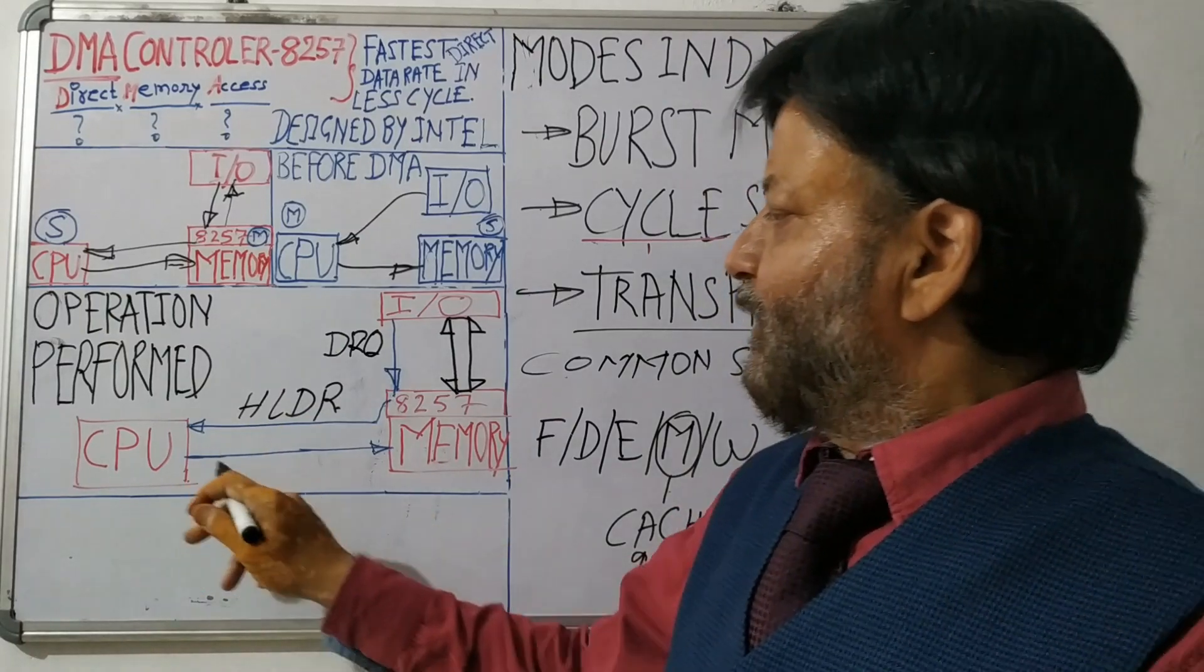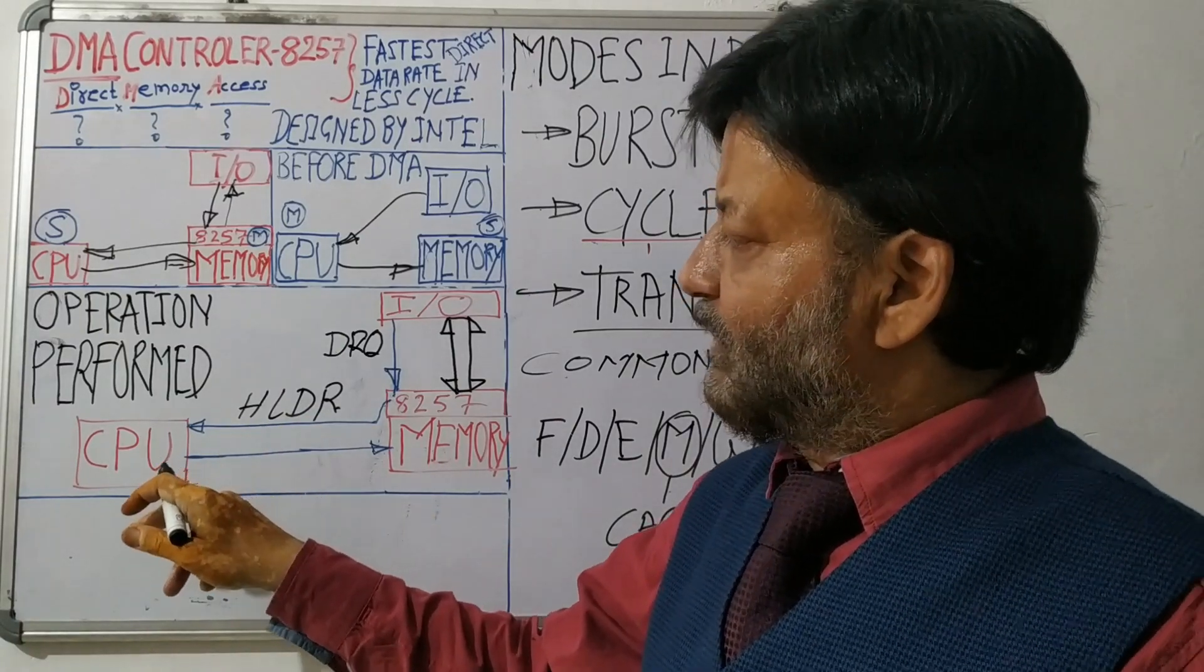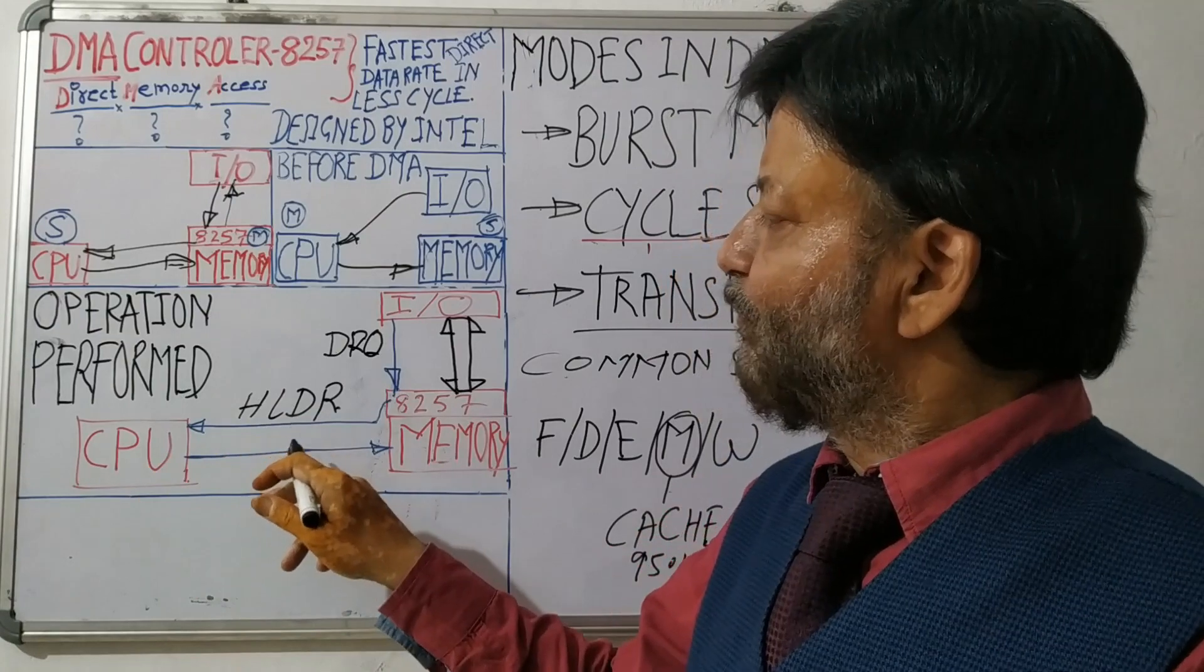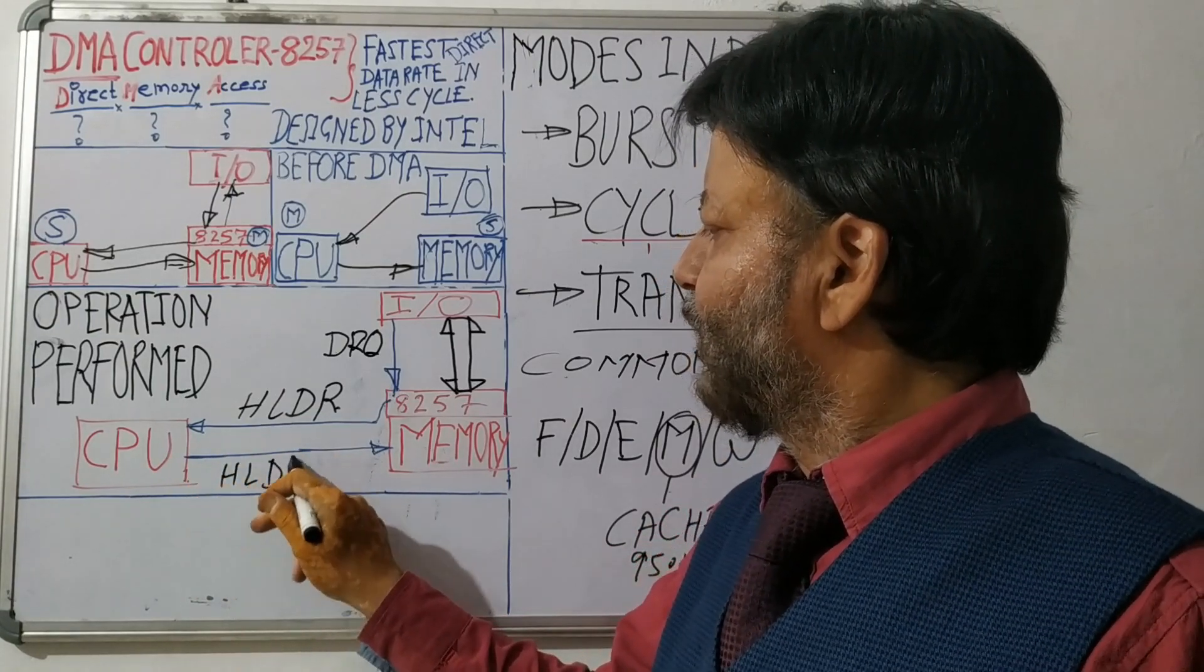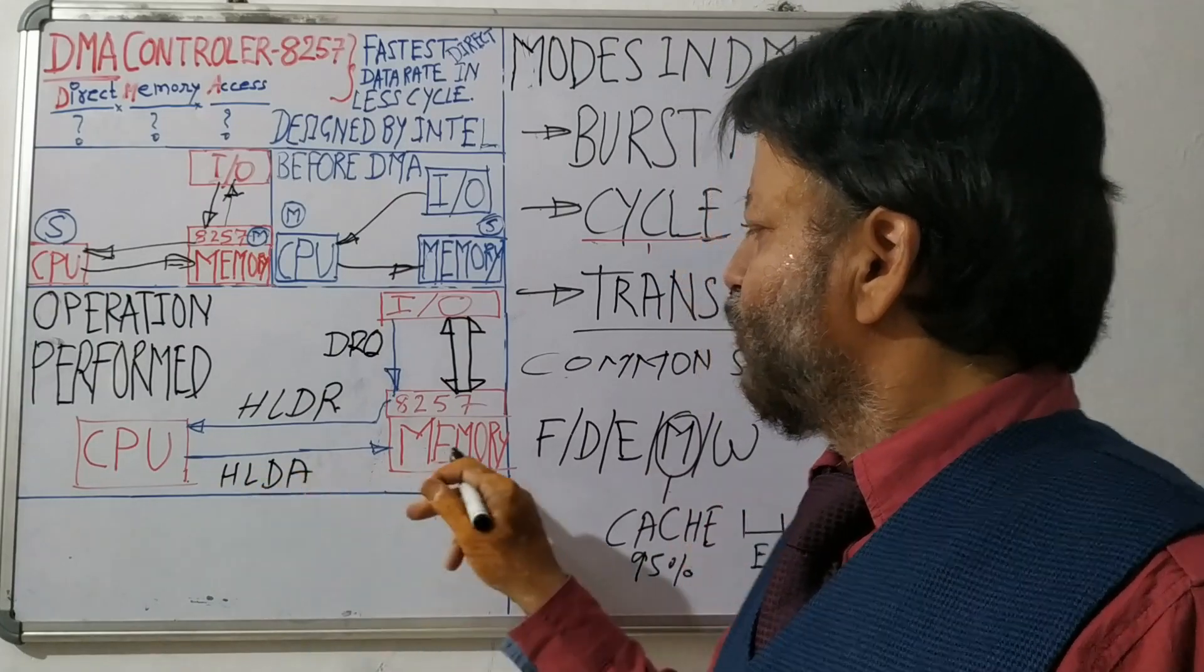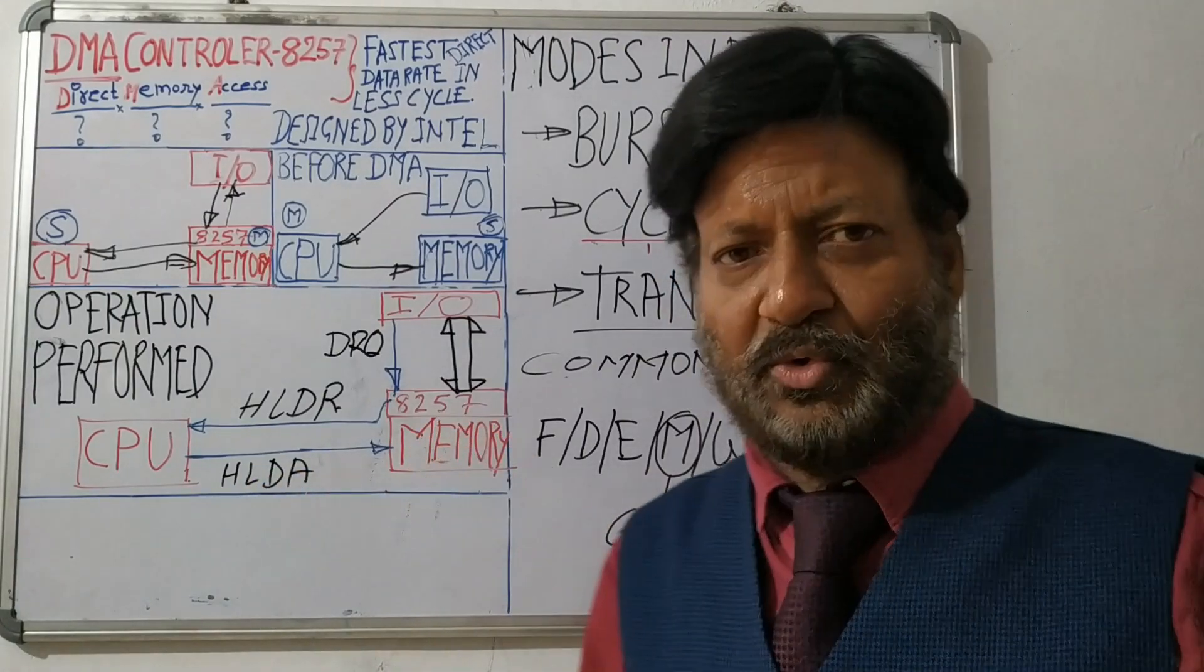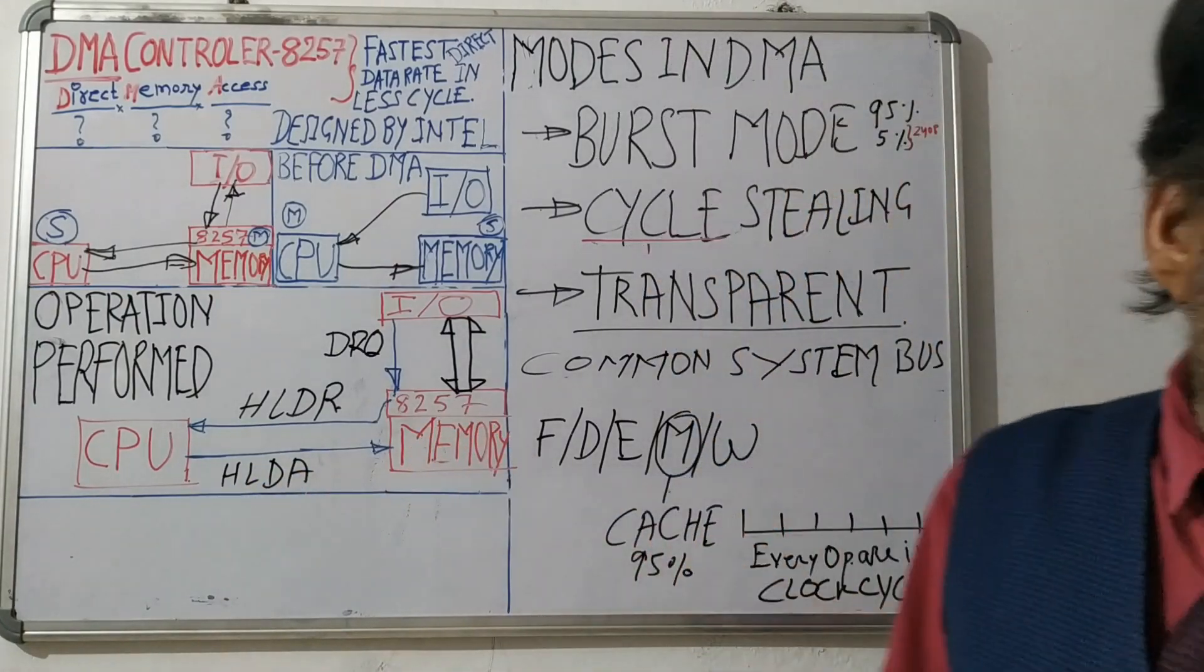So what will happen? If CPU is not using the system bus, it sends the hold acknowledgement to 8257 controller. This is the thing. Now.